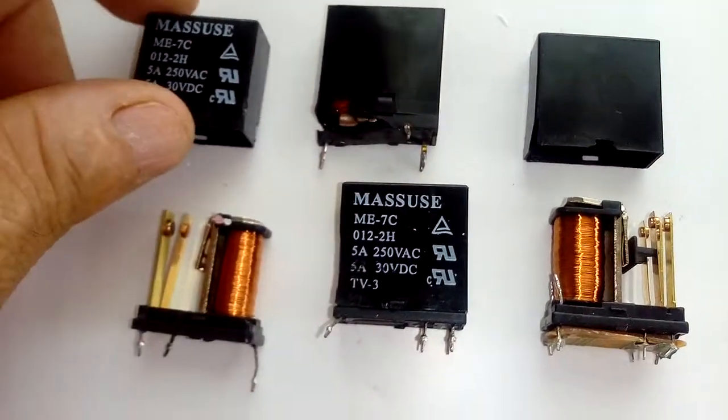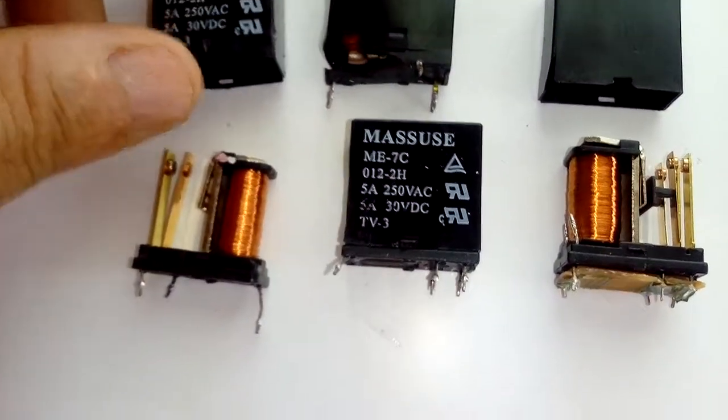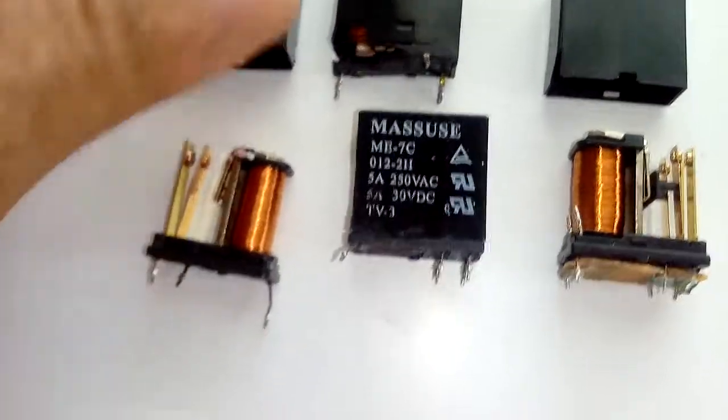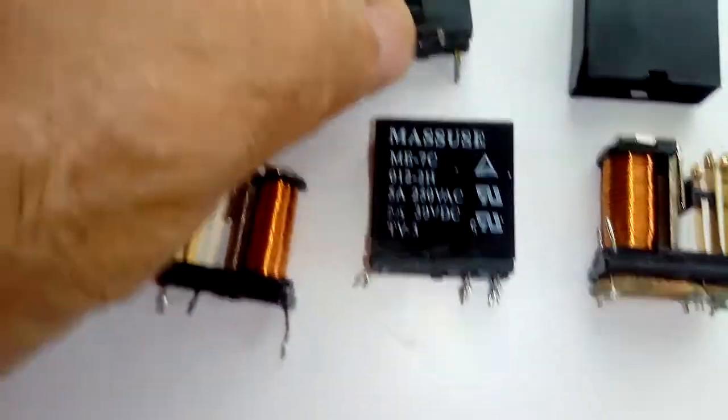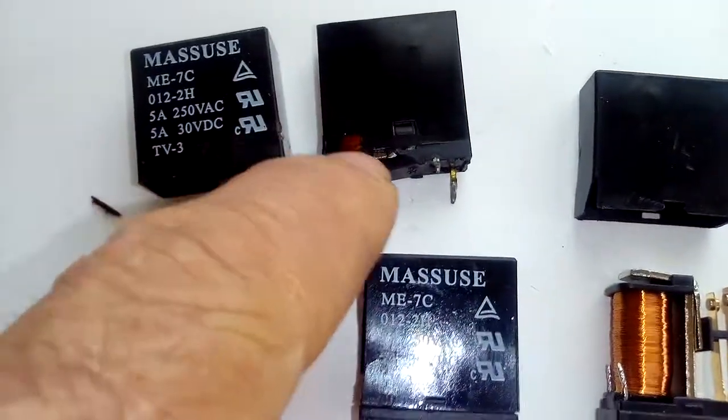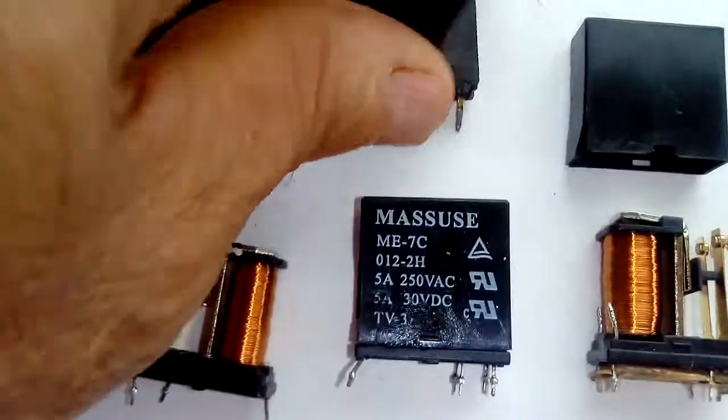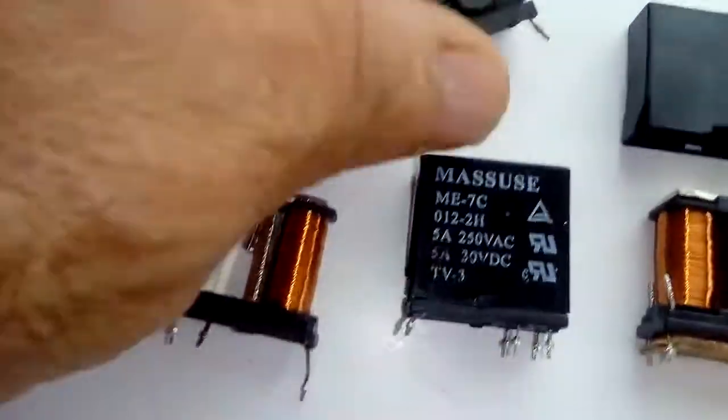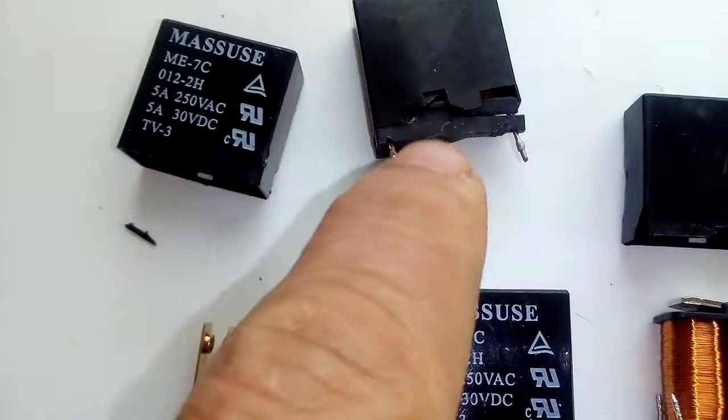These are relays here with the cover off. It's very easy to take the cover off. You just have to get these little clips here and this clip here on the bottom. They have two clips that you just push with a flat screwdriver.